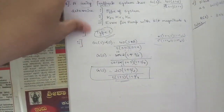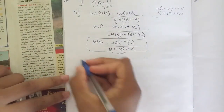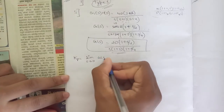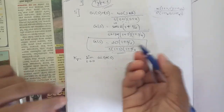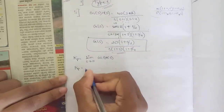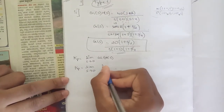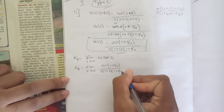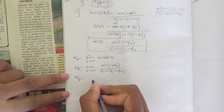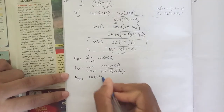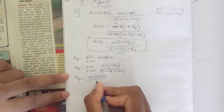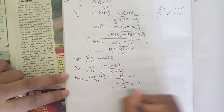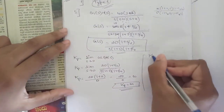Now we find Kp. The formula is Kp = limit as s→0 of G(s)·H(s). Substituting: limit as s→0 of 20·(1 + s/2) divided by s·(1 + s)·(1 + s/4). Since there is an s in the denominator, the denominator goes to 0, so Kp equals infinity.